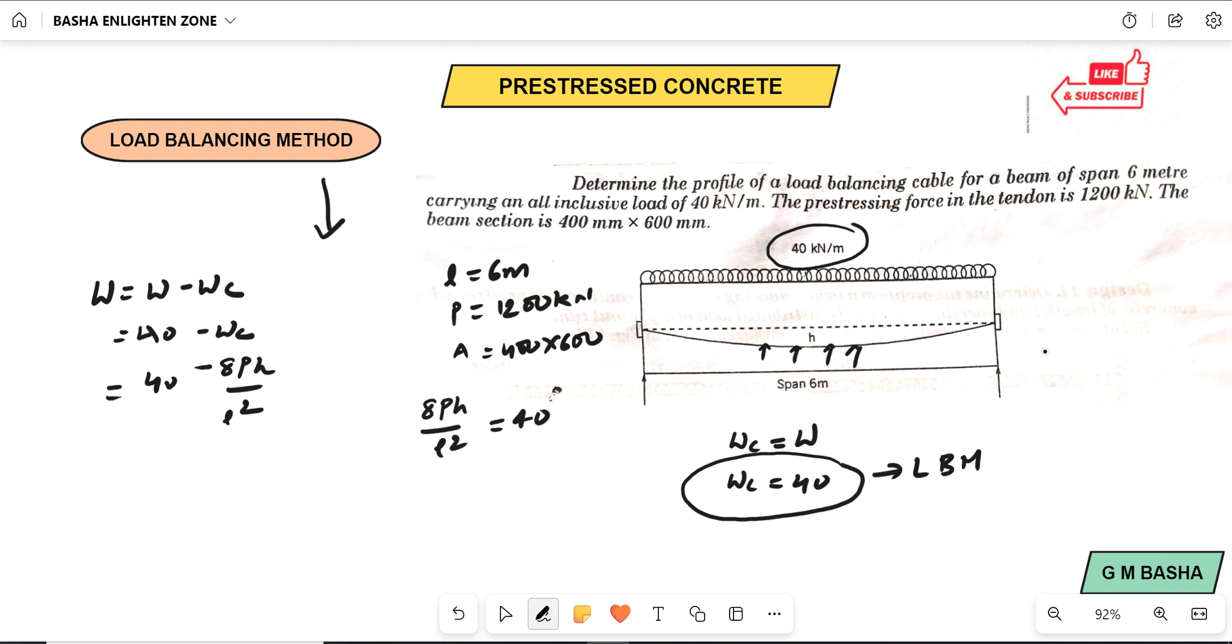What are we going to find here? Determine the profile of the load balancing cable for a beam. We have to find out the H value which is exactly the dip of the cable. Profile of load, based on what is the unknown here? We have to find this H value.